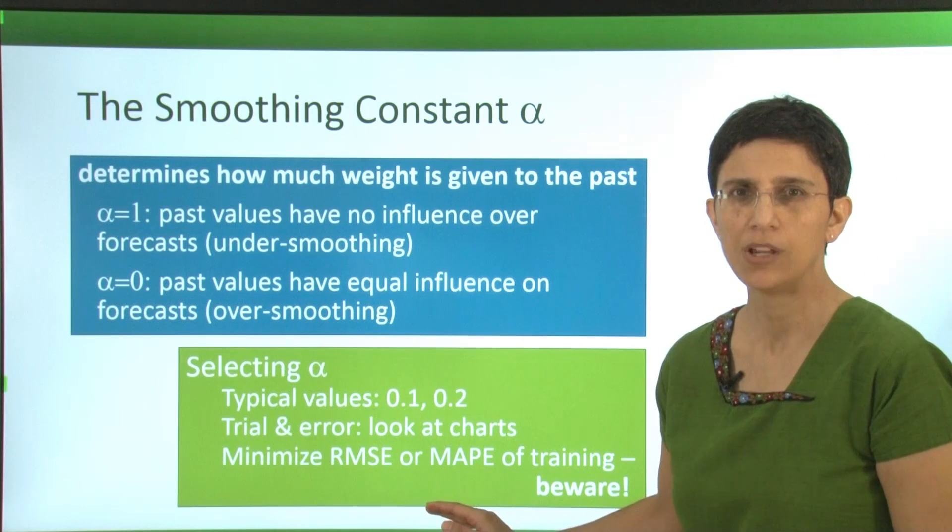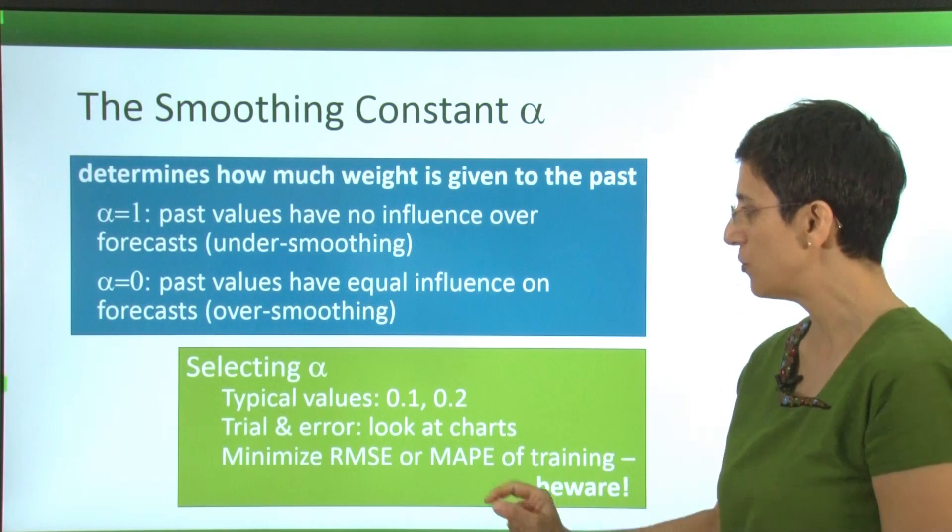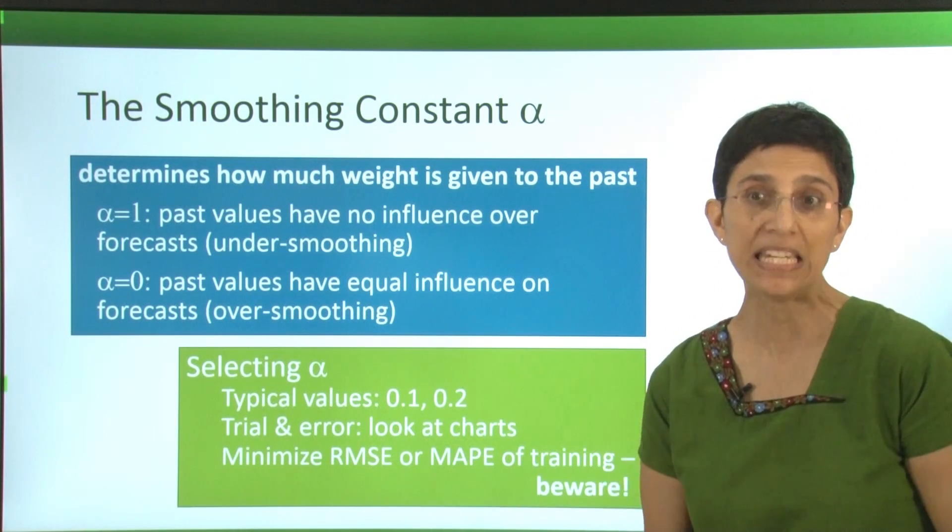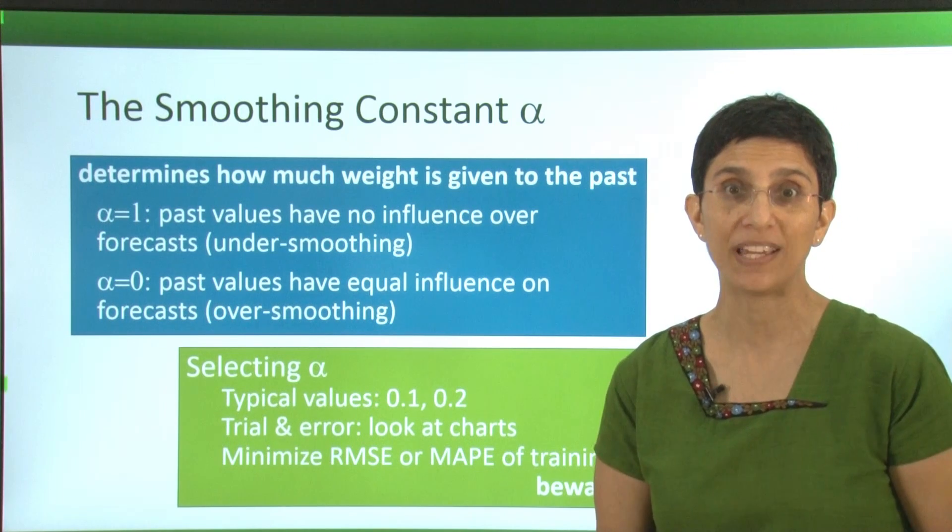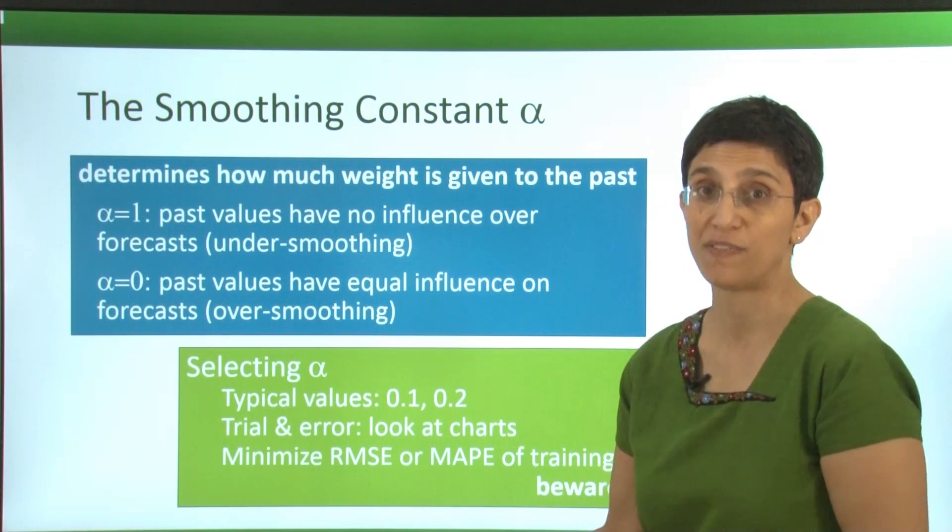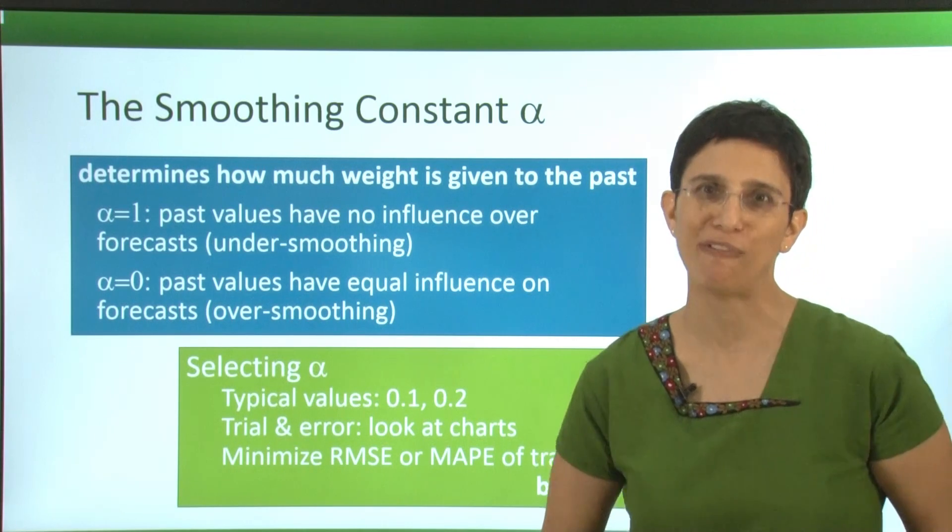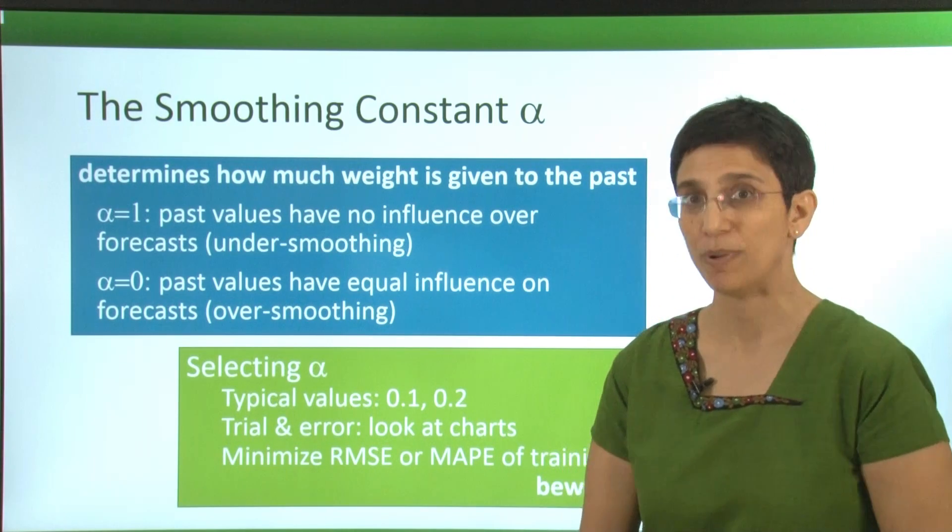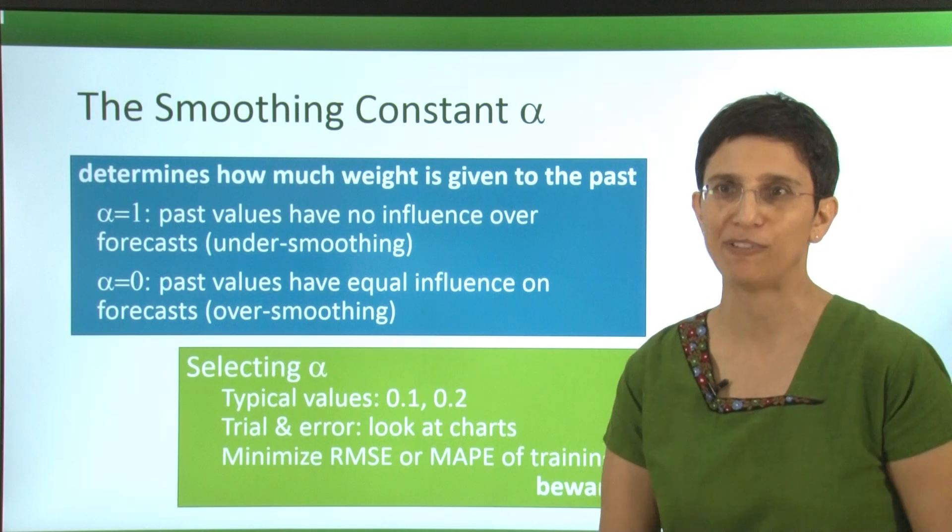If you do that, be really careful. For example, if you're looking to minimize the RMSE or the MAPE of the training period and choosing the alpha that gives you the smallest value, you might be overfitting the training period. So be very careful if you're going to choose alpha in that way.